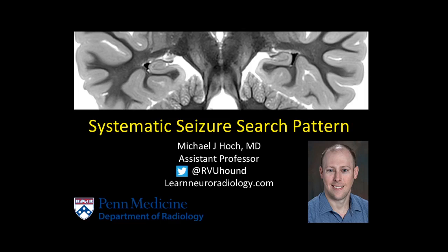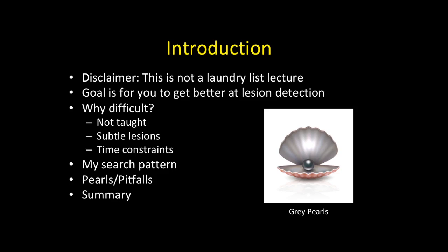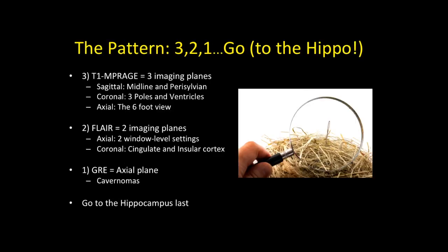Hello, this is Michael Hoke and we're going to talk about seizure search patterns on MRI. As long as you have a pattern and stick to it, you'll be better for it. This is not a laundry list lecture of lesions that cause seizures — the goal is to get better at finding subtle lesions. This is difficult because it's not routinely taught at the workstation, lesions can be subtle, and time constraints in busy practices mean you may only have eight to ten minutes per case. We'll cover pearls and pitfalls, many of which are anecdotal gray pearls not in the literature.